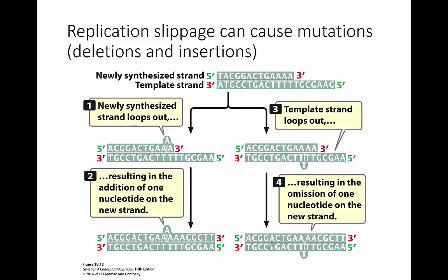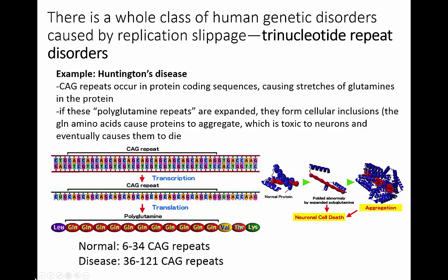If that looping out occurs in the template strand, you get one fewer A inserted in the repetitive region, resulting in a deletion of one base. There is a whole class of human genetic disorders caused by replication slippage called trinucleotide repeat disorders. I'm going to tell you about one of them that we've talked about before: Huntington's disease.